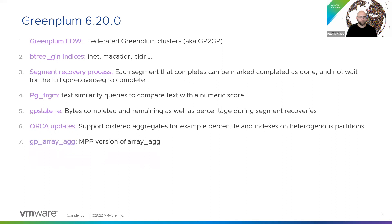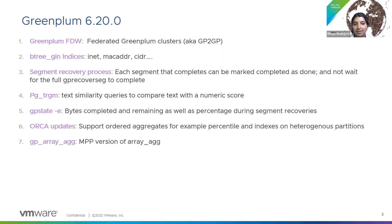Number seven: GP array_agg. Array_agg is an aggregate method that takes several input values and concatenates them into an array. We now have a GP array_agg that takes advantage of the parallelism of GreenPlum segments and produces a much faster response. You can substitute it in for the same use case — just swap it out and it's faster.